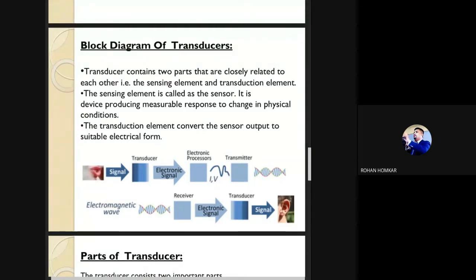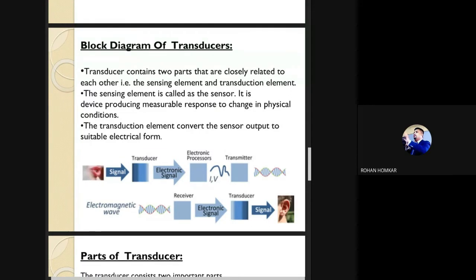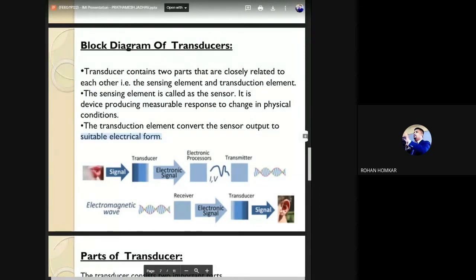The transducer contains two parts that are closely related to each other: the sensing element and transducer element. The sensing element is called a sensor. It is a device producing measurable response to change in physical conditions like displacement, pressure, temperature, and other physical quantities, converting them into suitable electrical form.